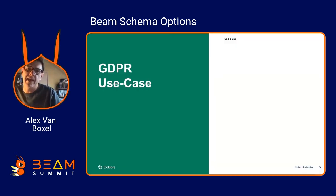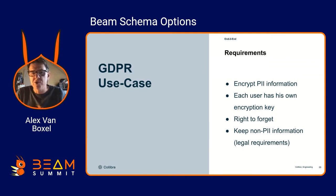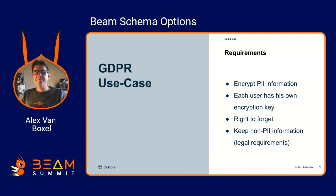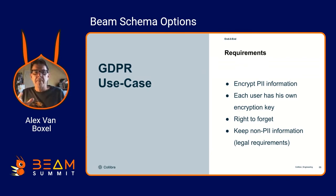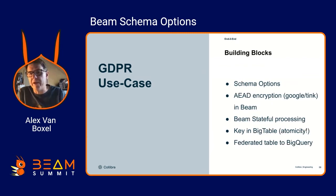Let's walk through an interesting end-to-end use case: a GDPR use case where you want to encrypt fields that are annotated as PII. The requirements: encrypt personal identifiable information, each user has their own encryption key — so you can discard the key if a user wants to be forgotten — but you want to keep non-identifiable information for legal requirements like invoices. The building blocks are schema options, BigQuery, and encryption.